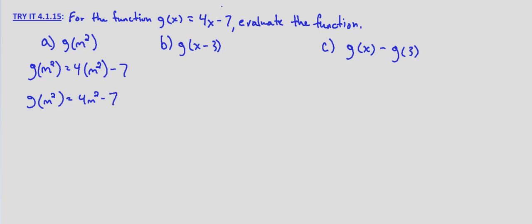Part b, we're given g of x minus 3, so let's go ahead and write out g of x equals 4x minus 7. So g of x minus 3, replace any place that there's an x with x minus 3. So this is 4 times x minus 3 minus 7, and then we simplify. Distribute the 4, we get 4x minus 12 minus 7, and then combine like terms. We get g of x minus 3 equals 4x minus 19.